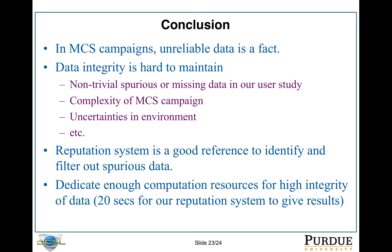In conclusion, in a mobile crowdsensing campaign, unreliable data is inevitable. We cannot avoid it. Data integrity is very hard to maintain due to non-trivial spurious or missing data, the complexity of the mobile crowdsensing campaign, and some environmental reasons. That's why we need a reputation system — it's a good tool to identify those spurious data points. One key takeaway is that when we ran our user study, the reputation system ran in 20 seconds with only 60 users. But if we want very high data integrity for a large-scale user study or mobile crowdsensing campaign, we need to dedicate enough computing resources to get a good result. That's the end of my presentation. Hope you enjoyed it. Thank you.